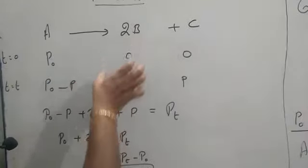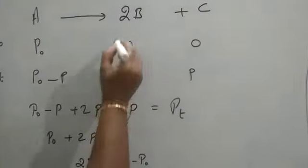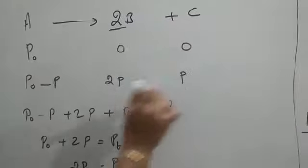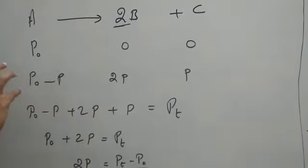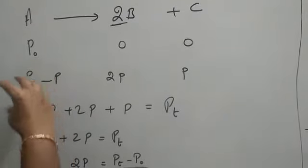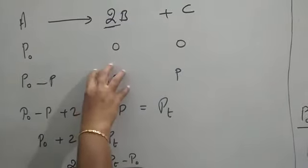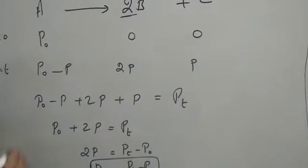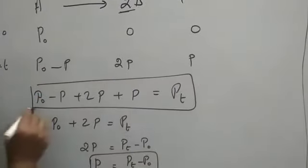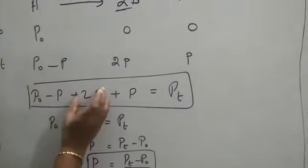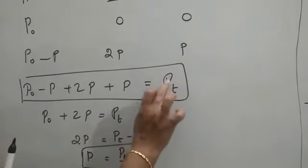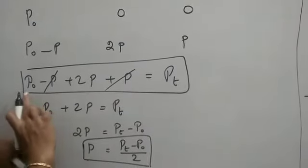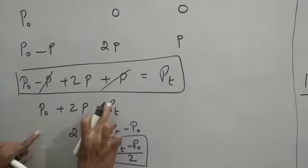From the P₀ amount of A, P amount of A is converted into 2P of B and P of C. This is the main key point. Now, find the total pressure in the container: pressure of A + pressure of B + pressure of C. Adding all gives total pressure Pt. The P terms cancel each other out, leaving P₀ + 2P equal to total pressure Pt.